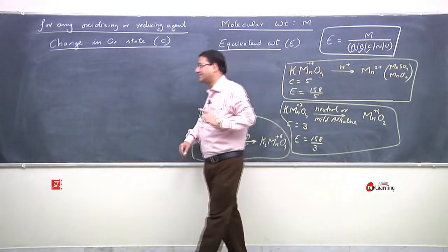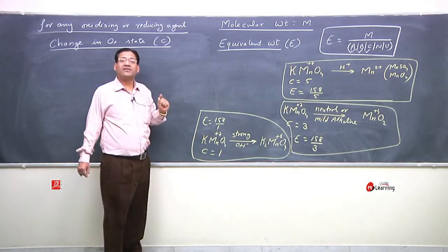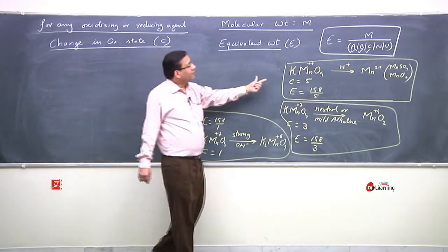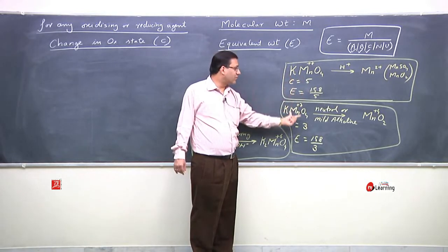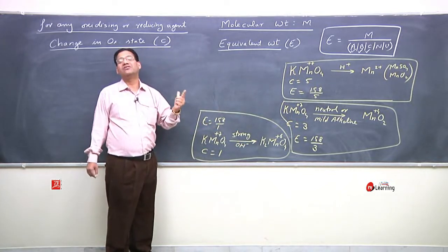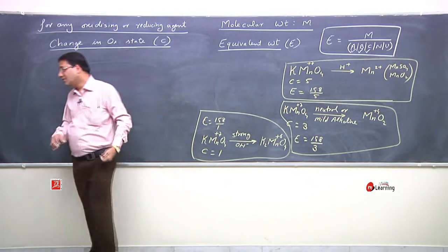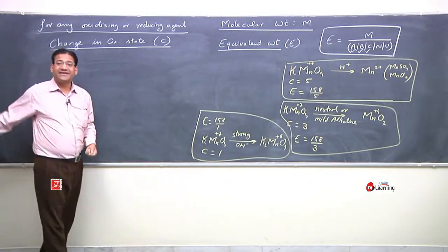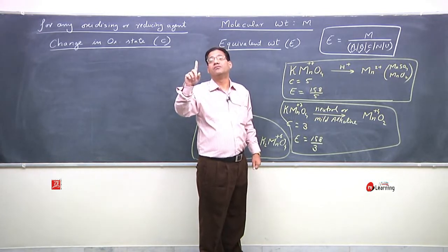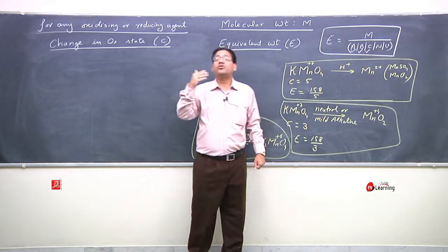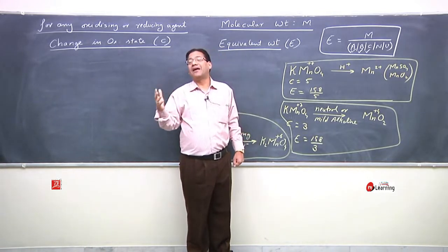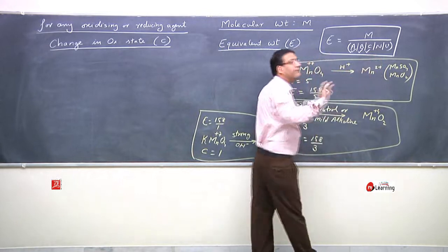This concept is applied for any oxidizing or reducing agent. If there is only one atom undergoing redox change, we use molecular weight upon change in oxidation state. If we have two or more atoms undergoing redox change, we apply the concept of N — that is, the number of electrons transferred.